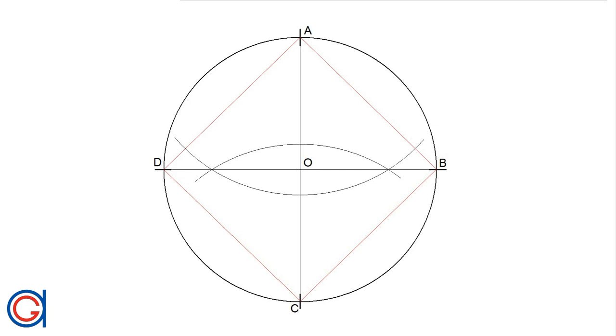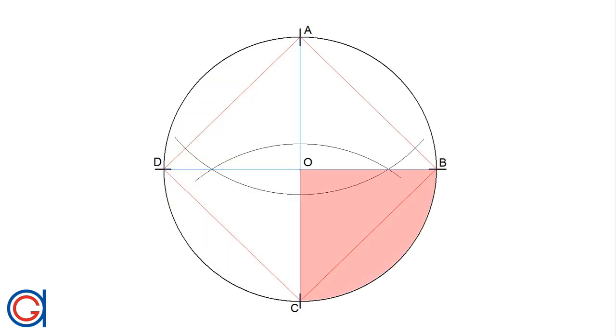C and B and we will get an inscribed square inside our circle and we also divide our circle into four equal quadrants or circular segments.